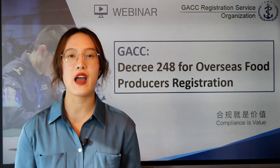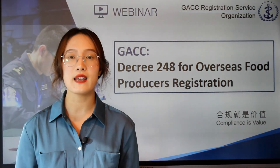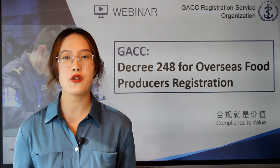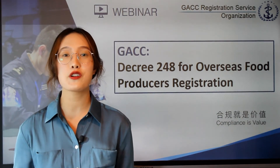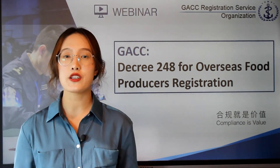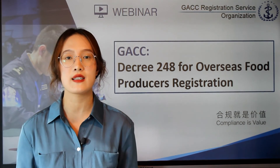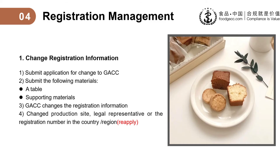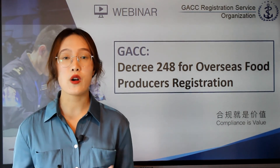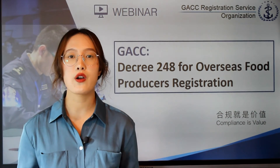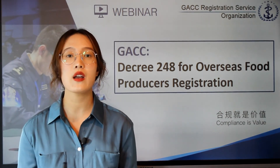In the last part, I will talk about registration management. GACC will conduct re-evaluation, so you cannot just relax after you get the registration in China. If your registration information changes while your registration is valid, you shall apply for a change to GACC and submit some materials — a table exhibiting the changed information and the original information, plus some supporting materials related to the change. If you change the production site, legal representative, or your registration number in your country or region, you must reapply for registration.